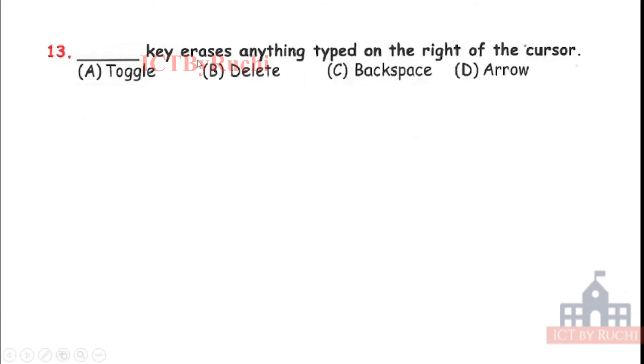Thirteenth. Dash key erases anything type on the right of the cursor. Toggle, delete, backspace, arrow. Tell me the answer. Answer is B. Delete key erases the thing typing on the right of the cursor. And backspace erases the thing type on the left of the cursor.